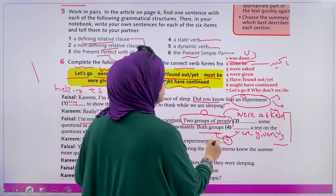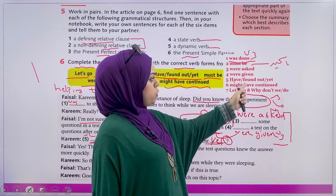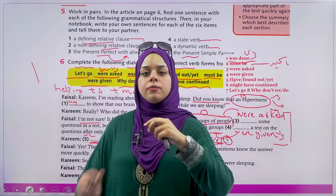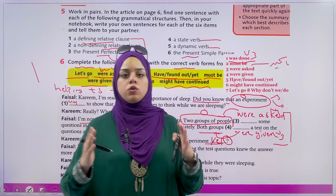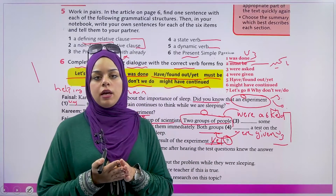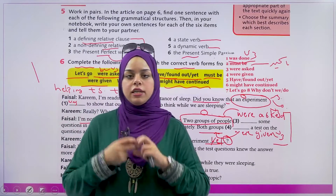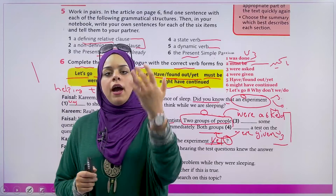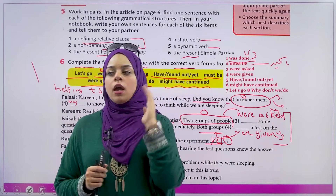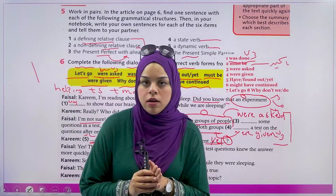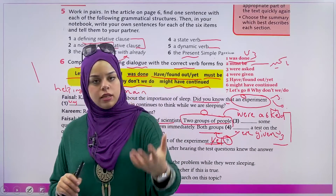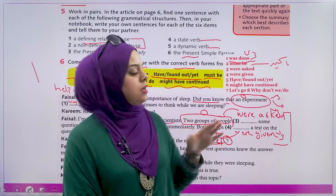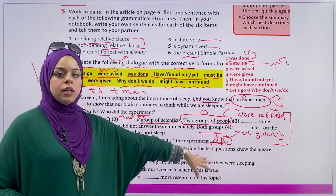'Have you found out about the result of the experiment yet?' What does 'yet' mean? As we learned, 'yet' means 'or not yet' — have you found the results or not yet? We use it to inquire whether something has or hasn't been done. Examples: 'Have you done your homework yet?' 'Have you had your lunch yet?' 'Have you met Yusuf yet?' 'Have you washed the dishes yet?' We use 'yet' at the end of a question to ask whether something has been done or not.